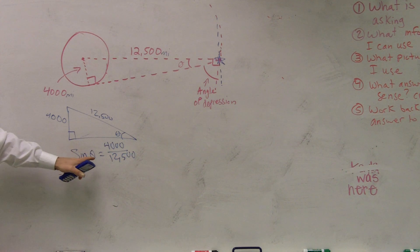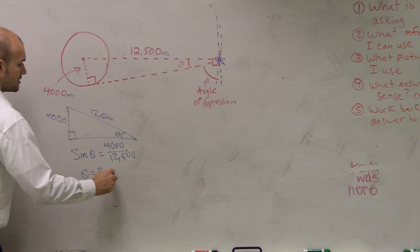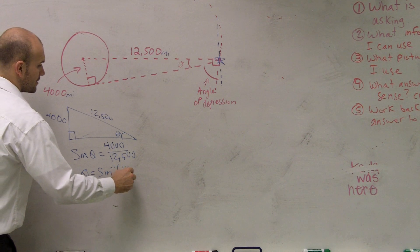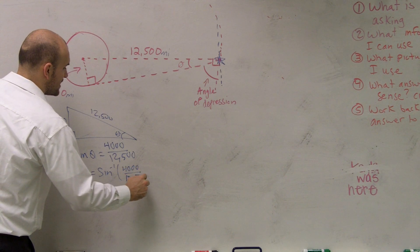So therefore, now if I want to figure out what theta is, I'm going to write theta equals sine inverse of 4,000 divided by 12,500.